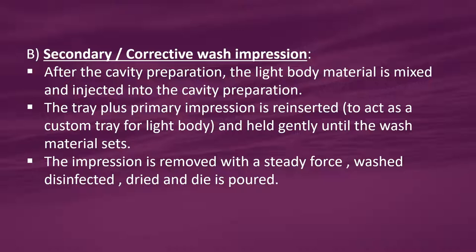Secondary or corrective wash impression: after the cavity preparation, the light body material is mixed and injected into the cavity preparation. The tray with the primary impression is reinserted to act as a custom tray for the light body material and held gently until the wash material sets. The impression is then removed with steady force, washed, disinfected, dried, and the die is poured.